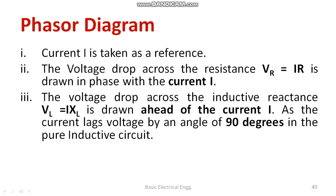The voltage across the inductor is VL = I × XL, where XL is the inductive reactance — the opposition offered by the inductor, expressed in ohms. The voltage across the inductor leads the current at an angle of 90 degrees, because we consider a pure inductor. Equivalently, the current lags the inductive voltage by 90 degrees.